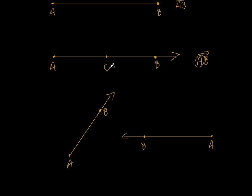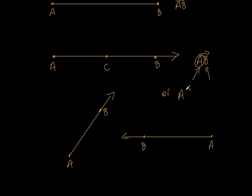Now let me really freak you out a little bit. I could put a C right here. Now it still starts at A, doesn't it? Because it doesn't keep on going — it stops there. But it goes through C and it also goes through B. I could still call this ray AB. I wouldn't call it ray ACB — for a ray, I only use two letters. The first one is always the endpoint. The second letter is just a point that the ray actually goes through.